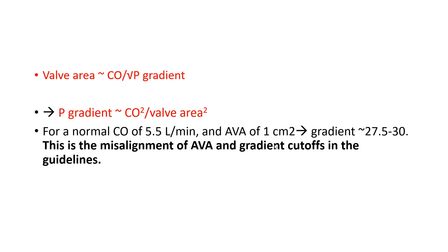That said, guidelines appropriately chose 40 mmHg because it is a very specific cutoff — if your gradient is over 40, you definitely have severe AS. But you can have a gradient of 30 with severe AS and normal flow — not even low-output AS. Normal output, normal flow AS with a gradient of 30. Hence the importance of hemodynamic measurement and confirmation of valve area ≤1 cm².